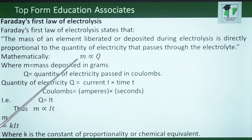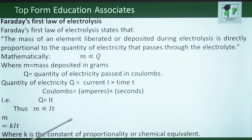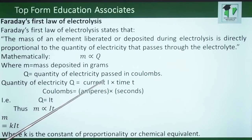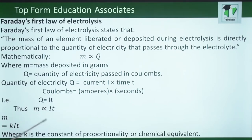Mathematically, we can say that mass varies directly as Q, where mass is deposited in grams and Q is the quantity of electricity passed in coulombs. The quantity of electricity Q is equal to current I in amperes times T in seconds. Since Q equals IT, we can say that M varies directly as IT, and M is equal to KIT, where K is a constant of proportionality or chemical equivalent.